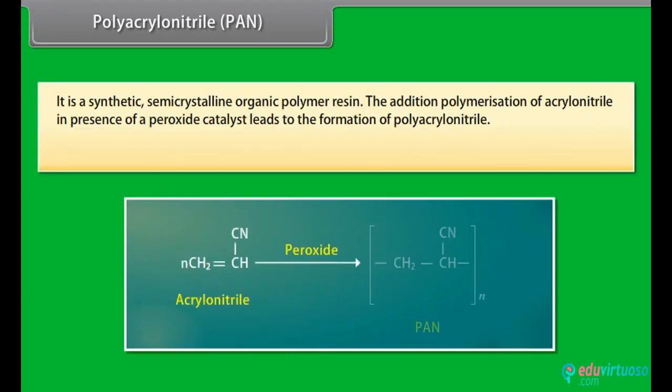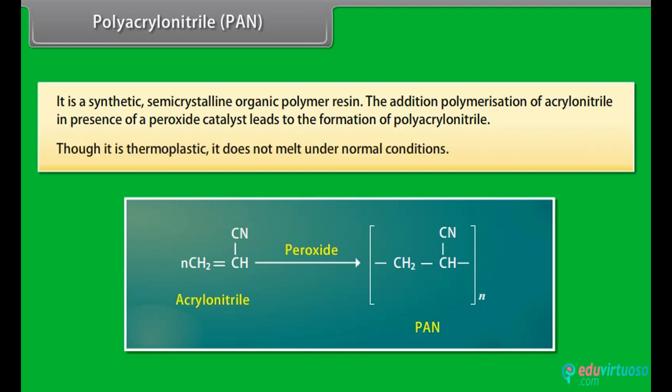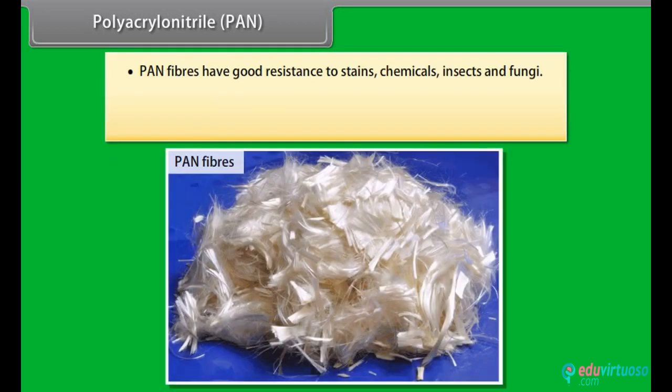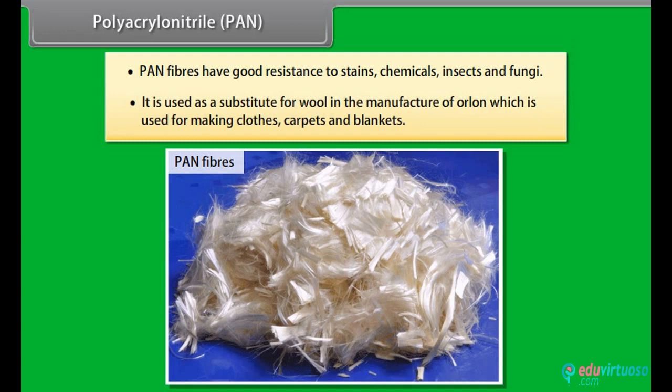Polyacrylonitrile (PAN): it is a synthetic semi-crystalline organic polymer resin. The addition polymerization of acrylonitrile in the presence of a peroxide catalyst leads to the formation of polyacrylonitrile. Though it is a thermoplastic, it does not melt under normal conditions. PAN fibers have good resistance to stains, chemicals, insects and fungi. It is used as a substitute for wool in the manufacture of Orlon, which is used for making clothes, carpets and blankets.